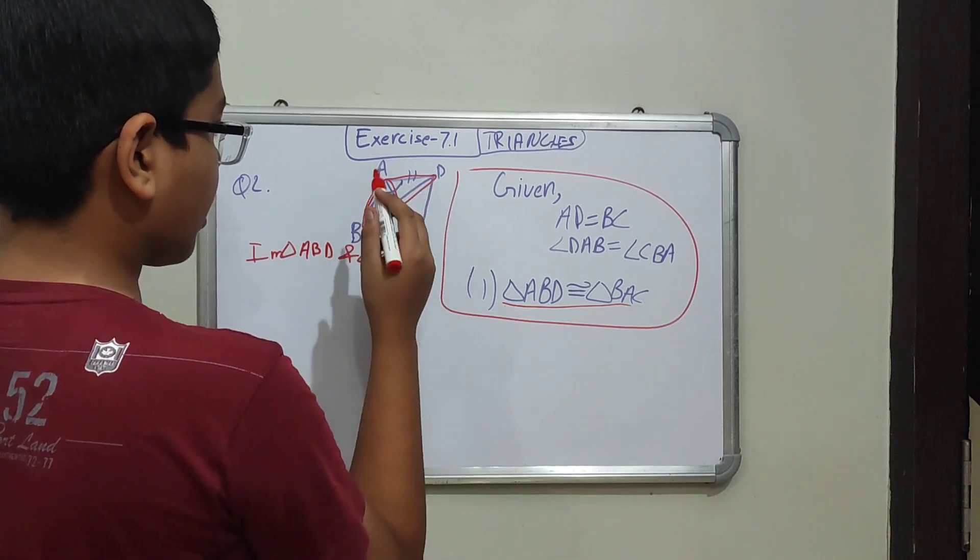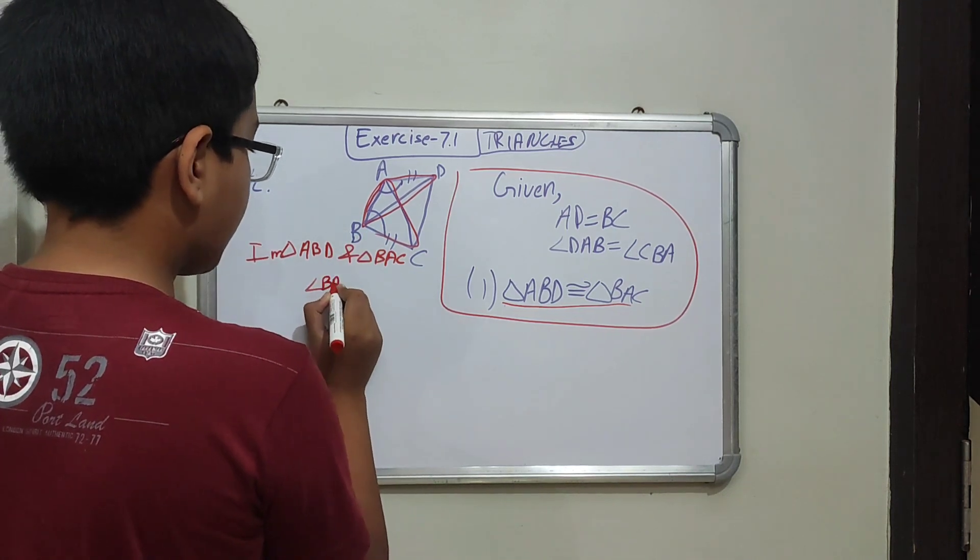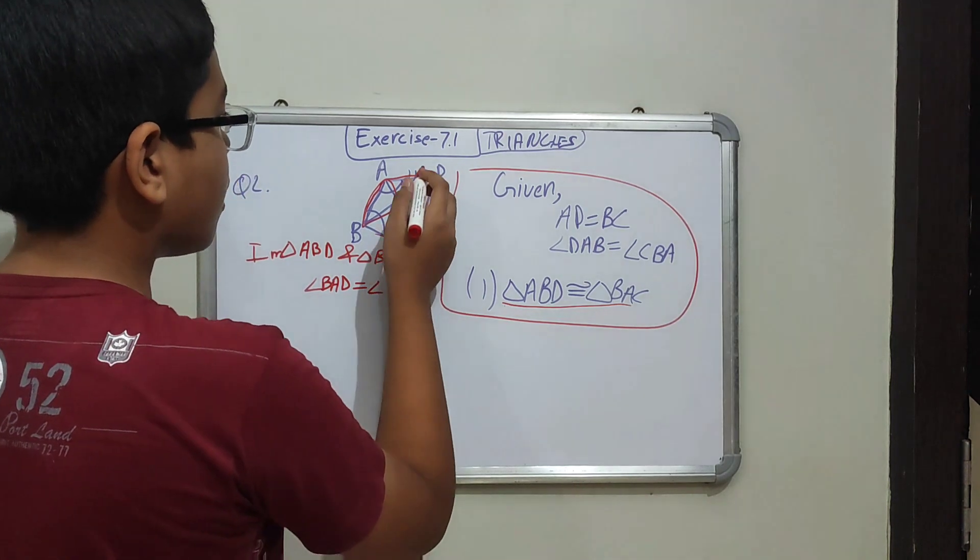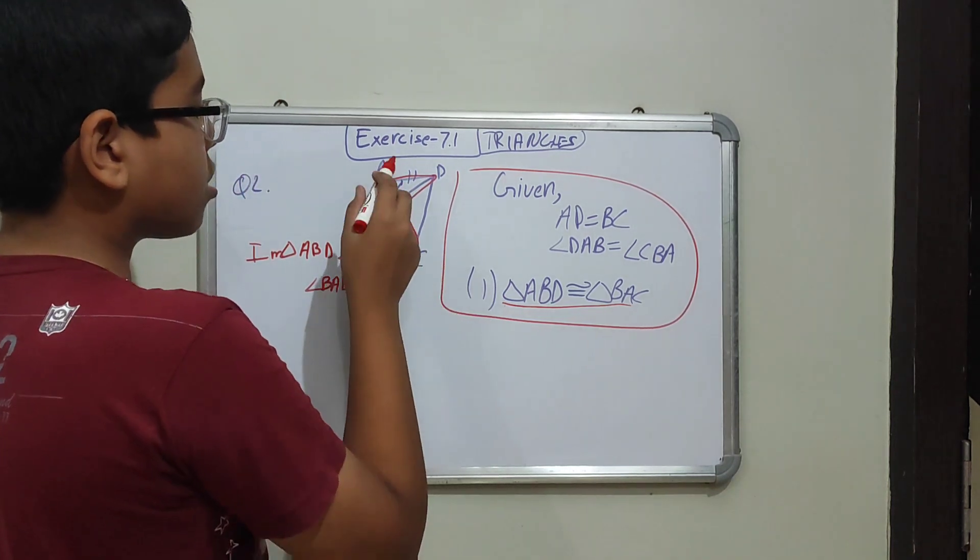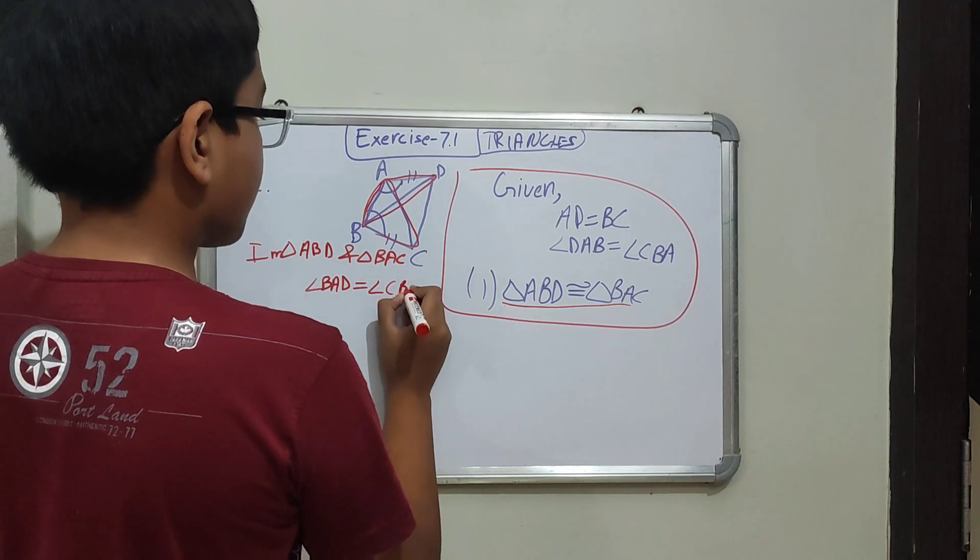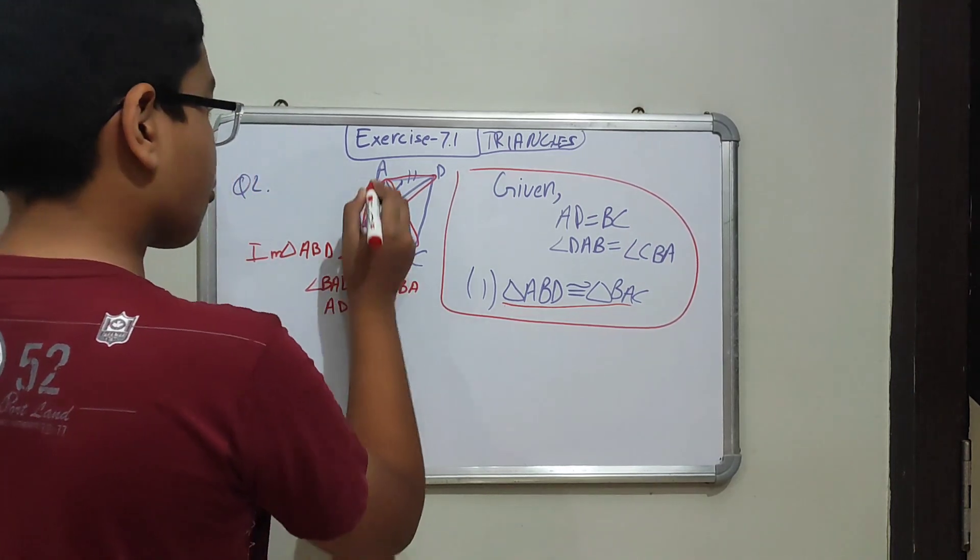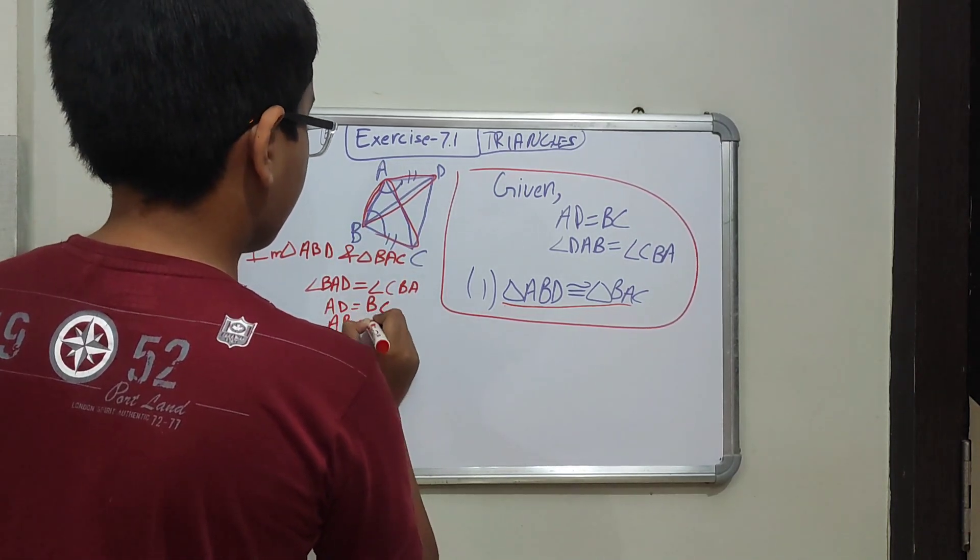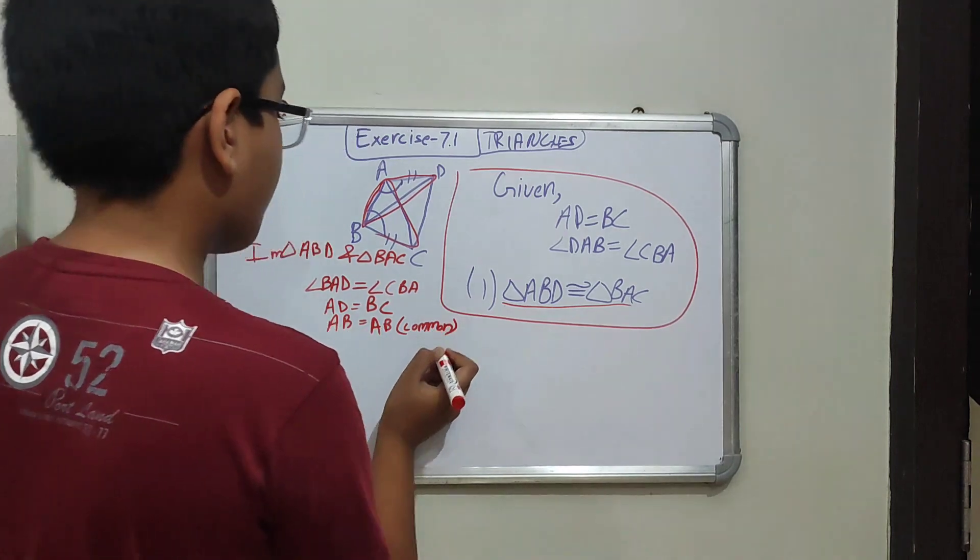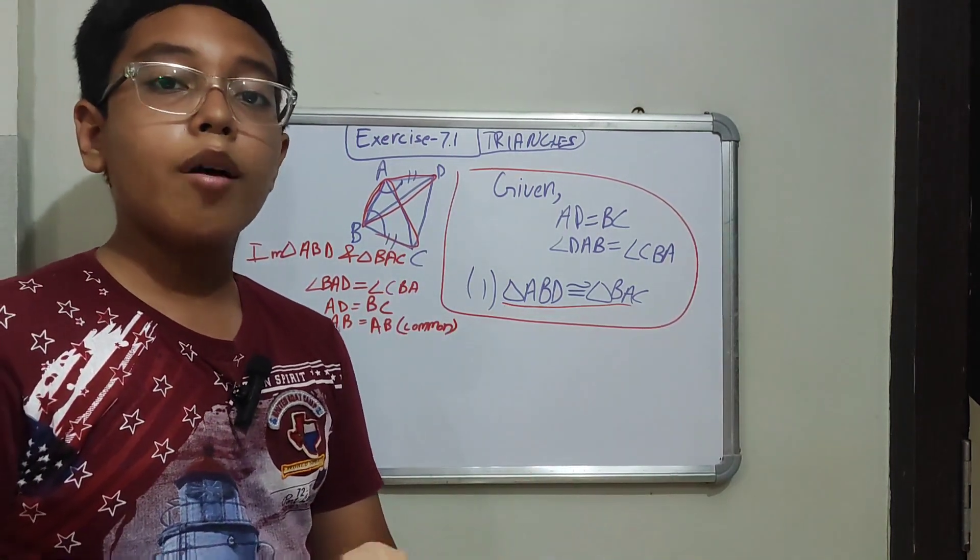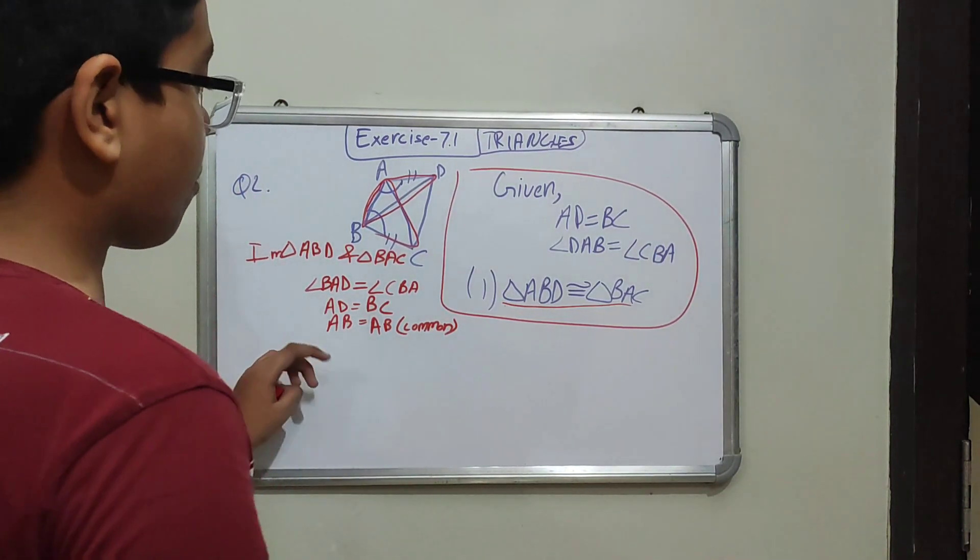Angle ABD is equal to angle BAC. So we need to see that it is congruent or not.